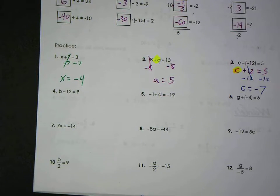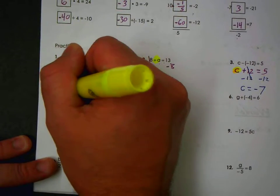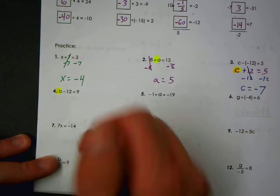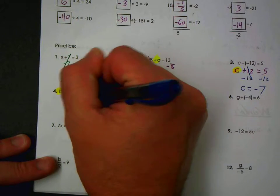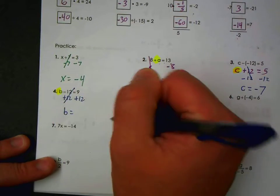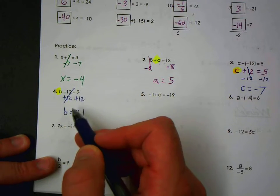I have a plus twelve. The opposite operation would be minus twelve. If you have five dollars and you spend twelve dollars, you owe someone seven dollars. What number minus twelve is nine? Same thing, we're trying to get b by itself. It's a minus twelve, so I add twelve. And I get b equals nine plus twelve, twenty-one. Is twenty-one minus twelve nine? Yes.